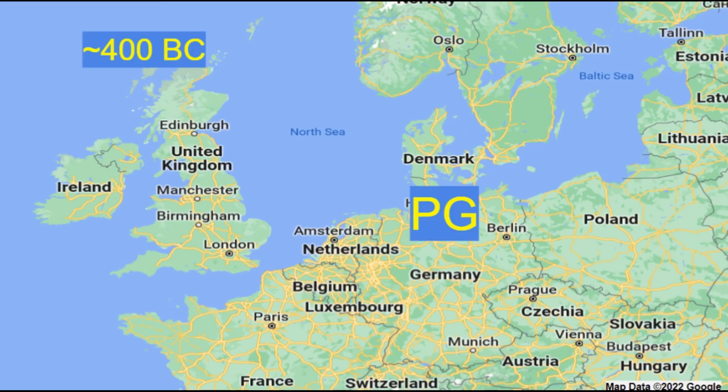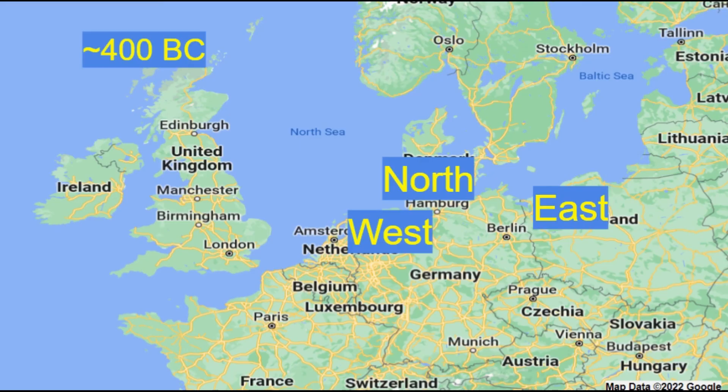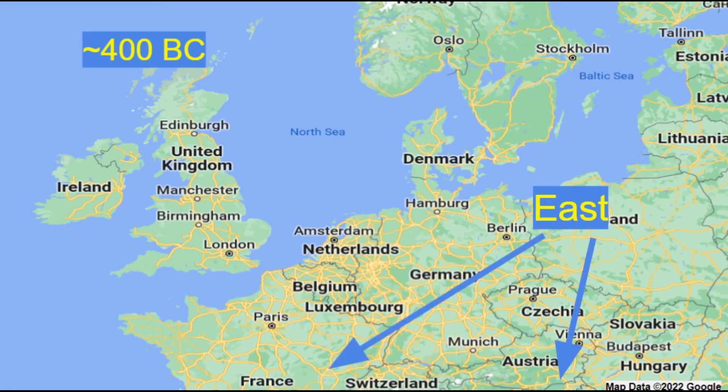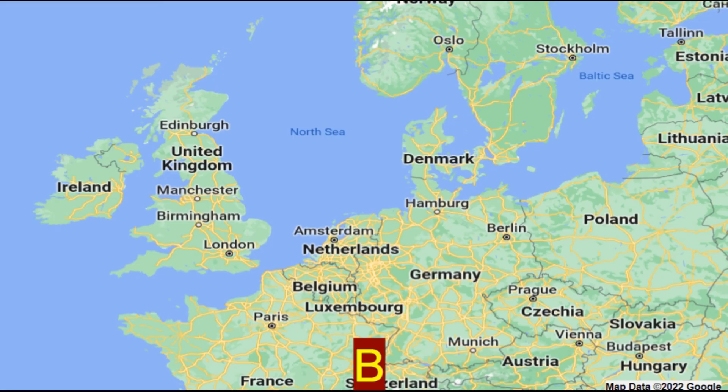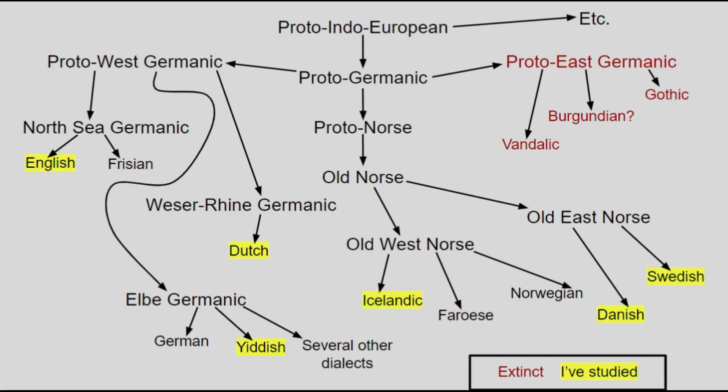Around that time, Proto-Germanic split into three sub-branches: West Germanic, North Germanic, and East Germanic. East Germanic was originally spoken in what's now Poland and then spread through conquest. The two groups of East Germanic speakers were the Vandals and Goths, also known as the people who overthrew the Roman Empire. Burgundian, a language spoken in what's now eastern France and western Switzerland, may have also been part of the group. All these East Germanic languages are extinct, so I won't talk about them much.